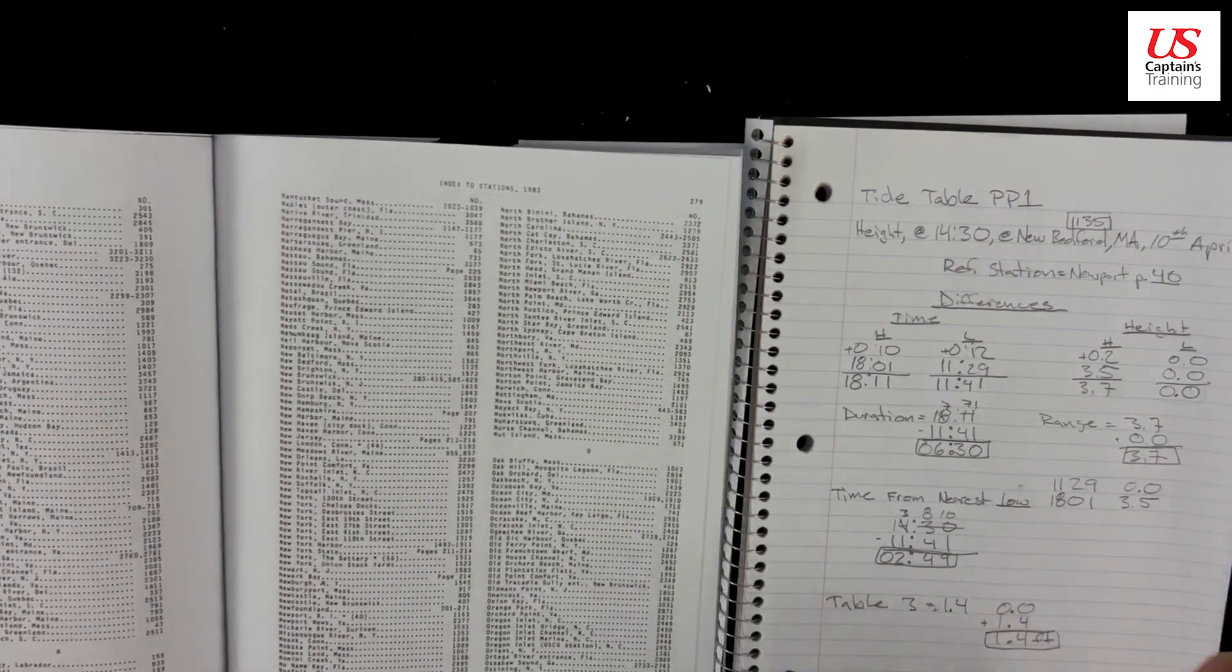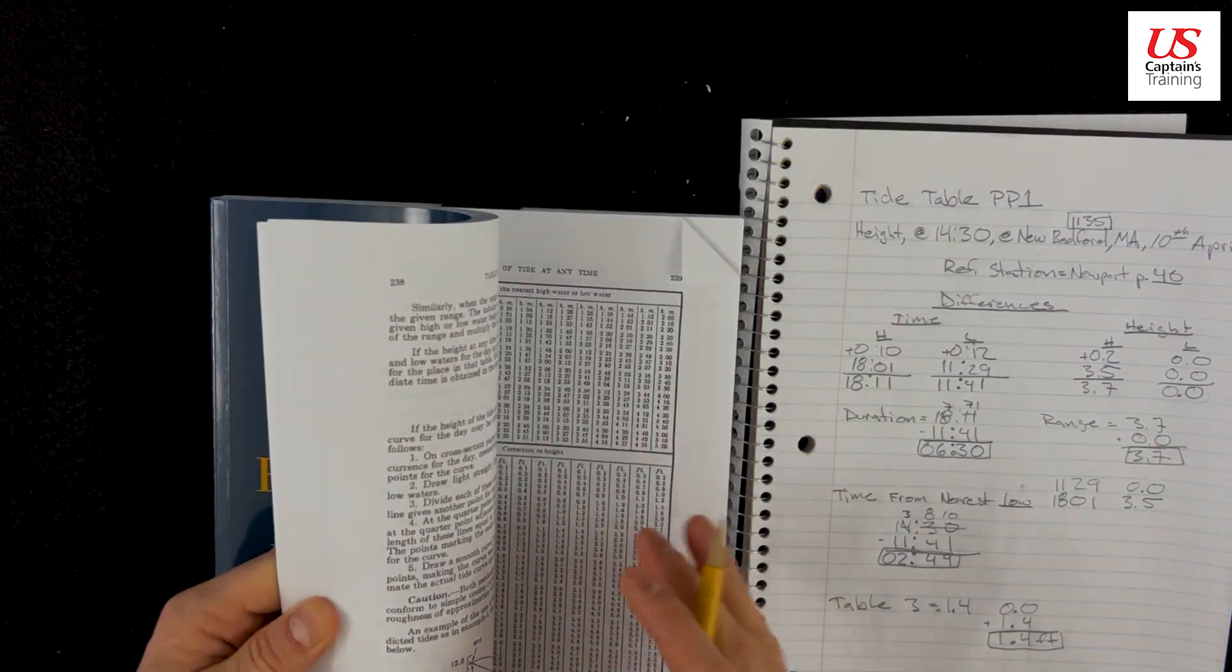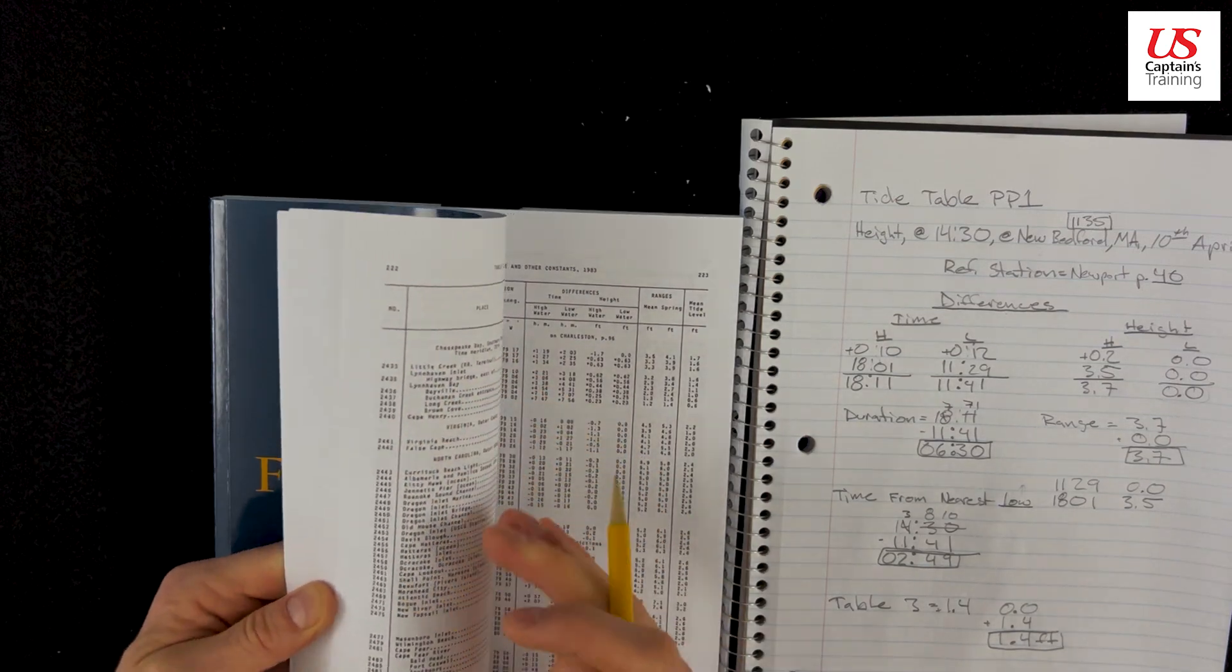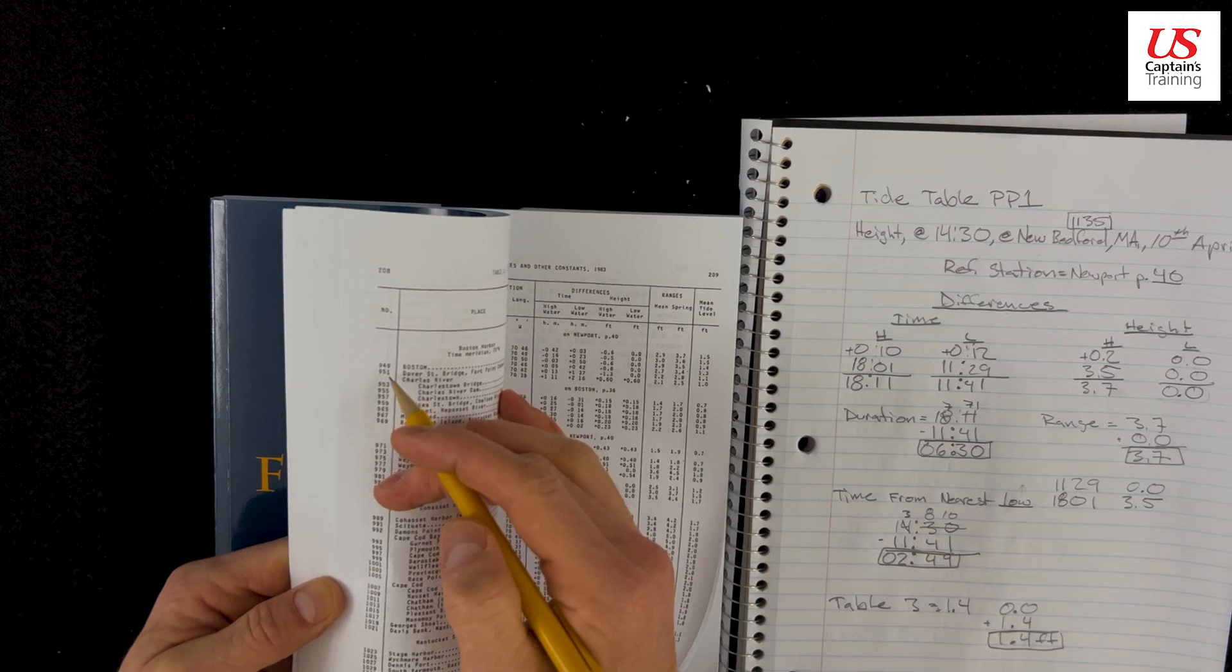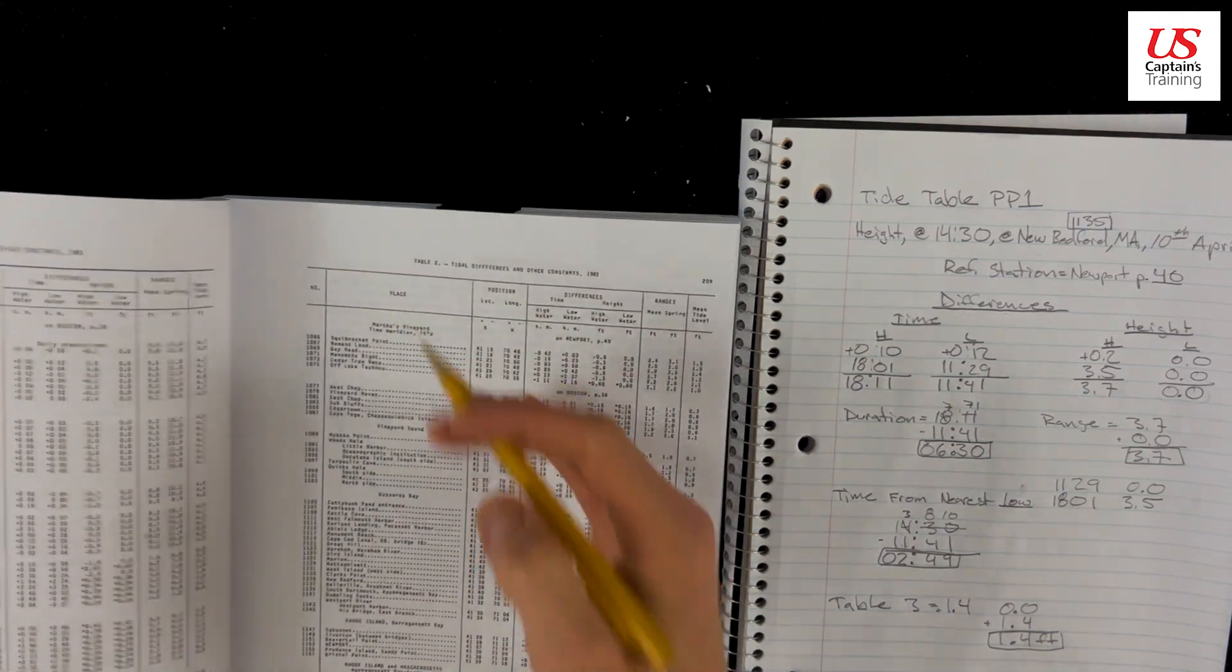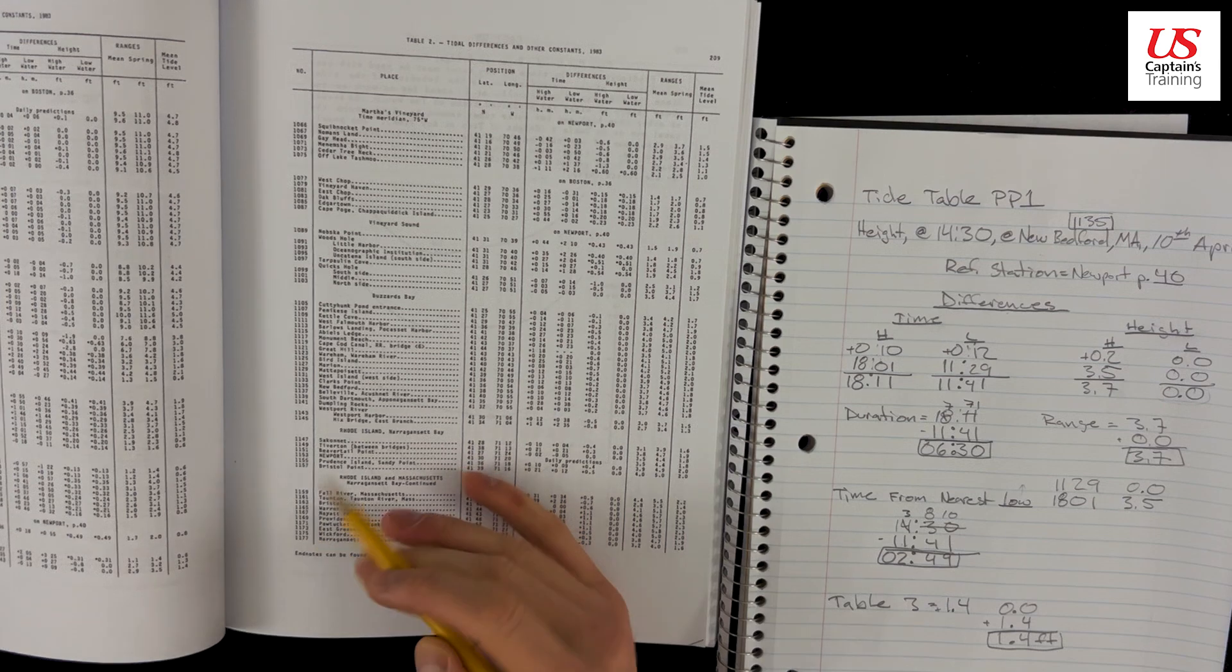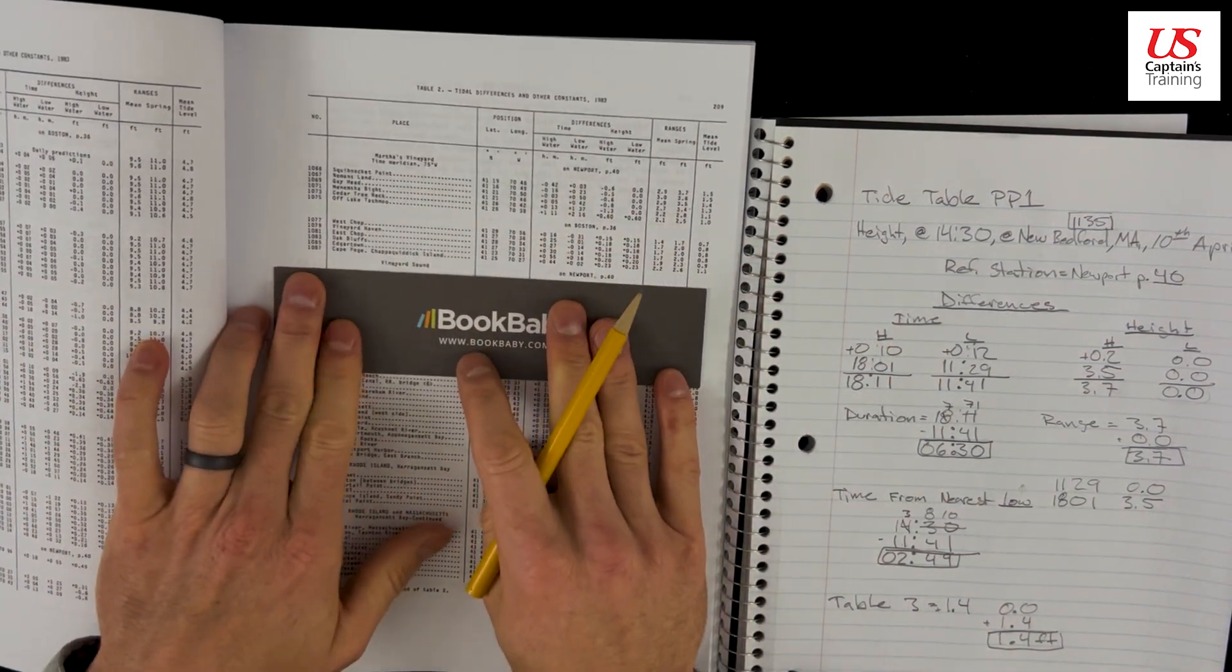And then we bounce to our table twos, which is closer to the beginning of the book, and we look up 1135. So here's the numbers, this is where we're looking it up. We cruise to 1135. There's 9, there's 10, 1066, 1177. We know we're on this page, so we cruise down this list and we find 1135.